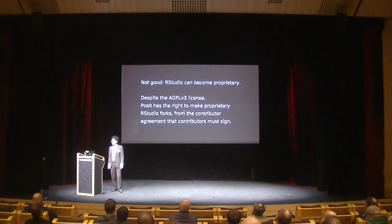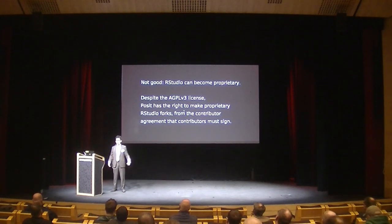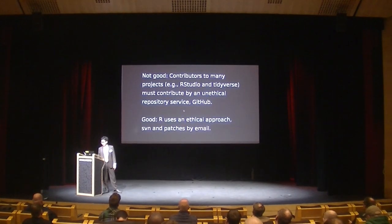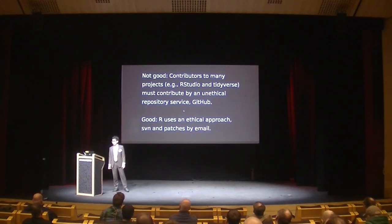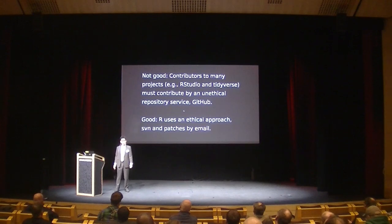Now I'll start to say some of the not-so-great things. RStudio is free software, except RStudio requires its contributors to sign a Contributor License Agreement — an agreement that gives Posit the right to all the contributions. So anyone can download and redistribute the AGPL version, but Posit alone is allowed to distribute a proprietary fork of RStudio. Also, with a lot of R ecosystem projects, contributions are only allowed through GitHub — an unethical software repository. In contrast, R itself still uses good free software version control and accepts patches by email.